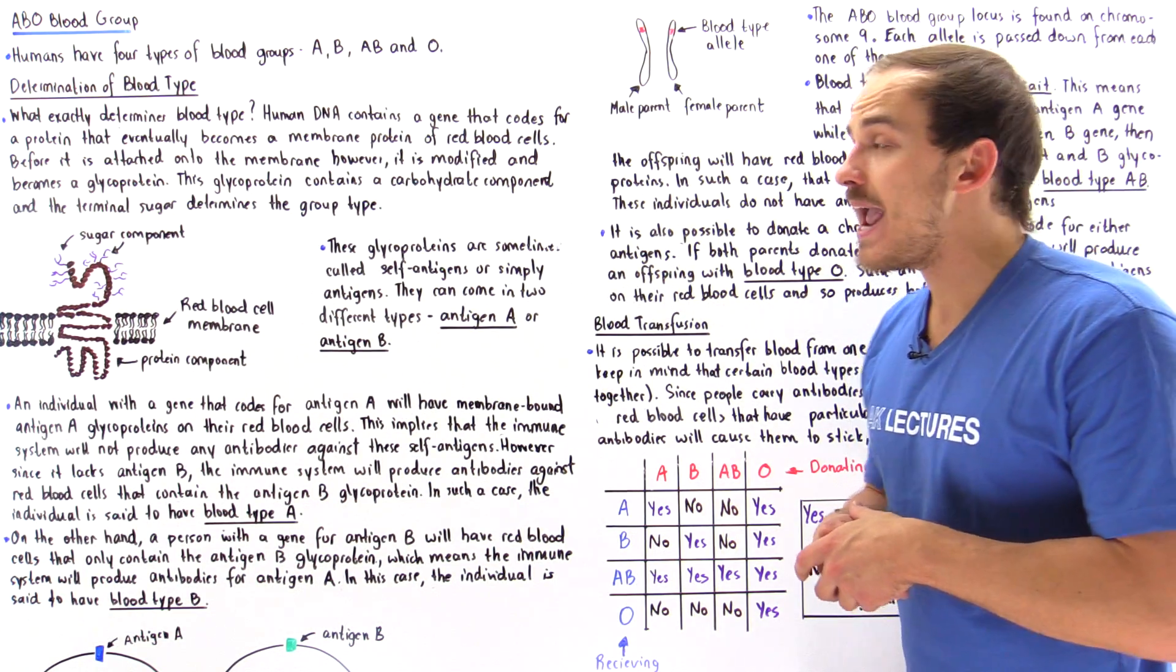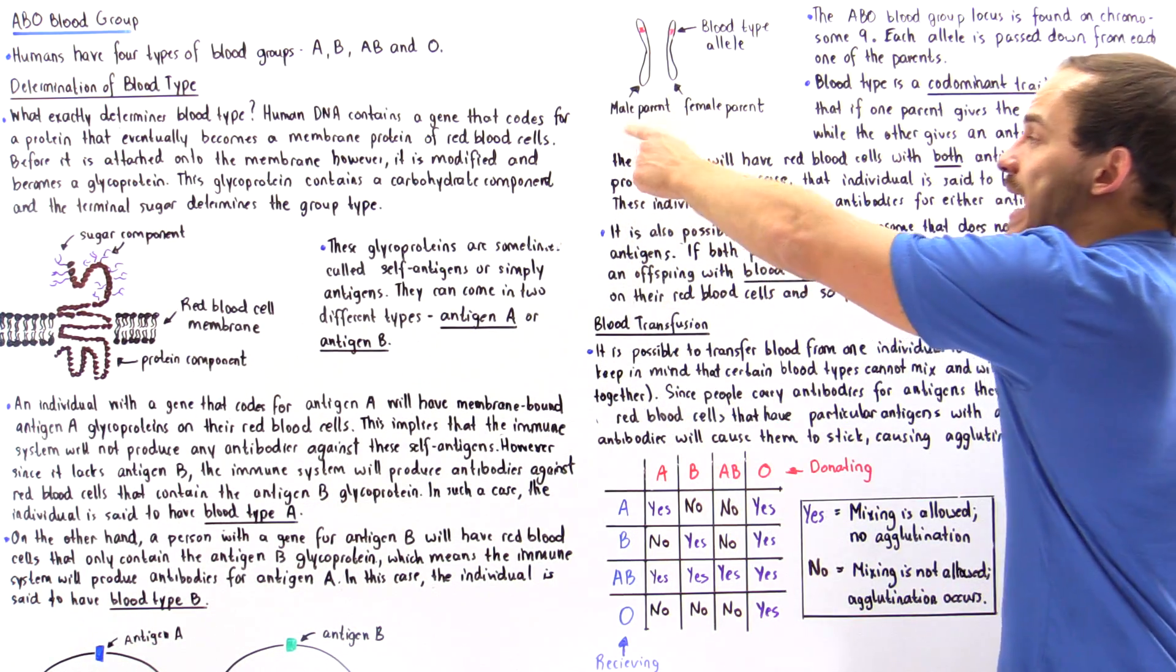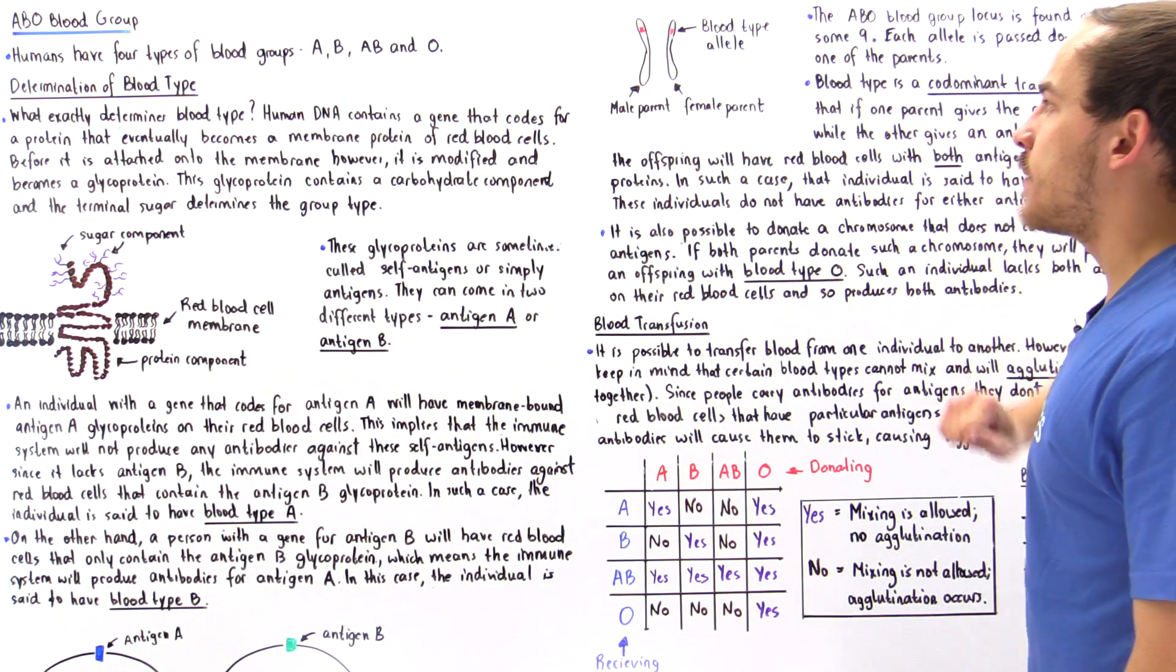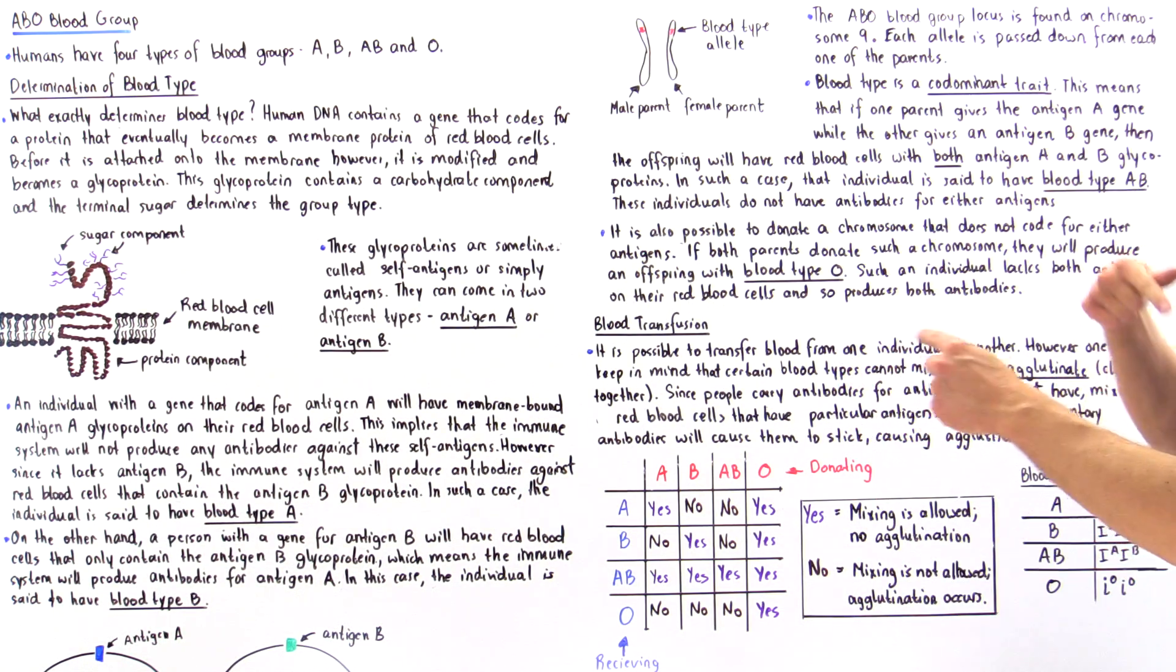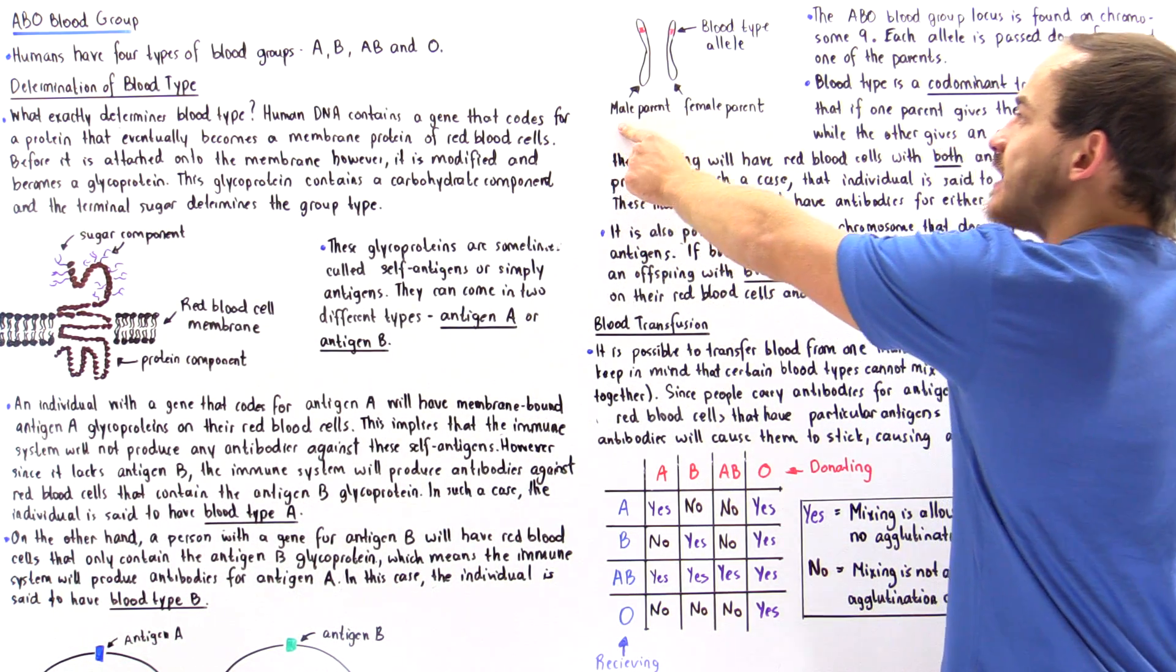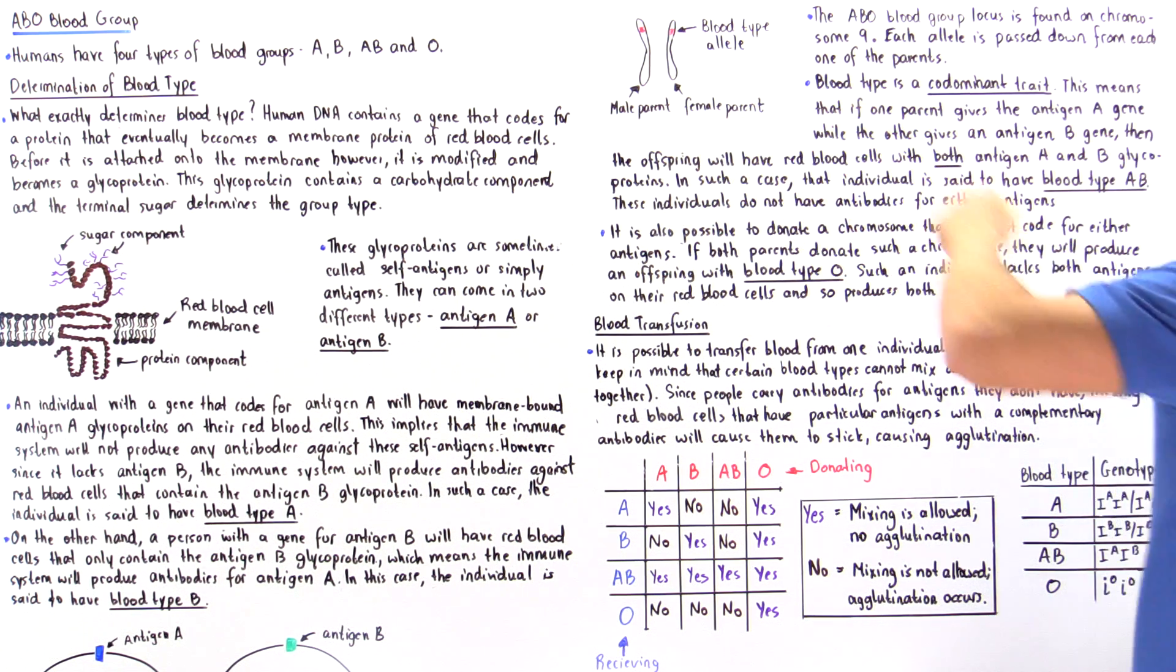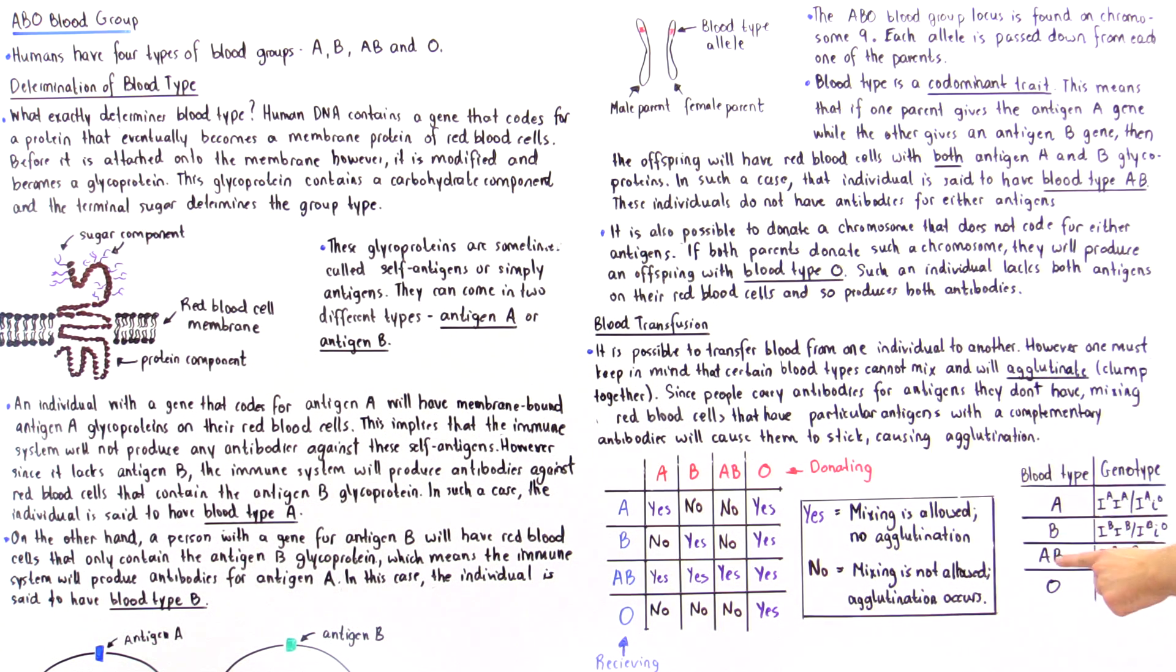To form blood type AB, the male parent has to be A and the female parent has to be B, or vice versa. This male has to be B and this female has to be A, and only then will we form blood type AB.